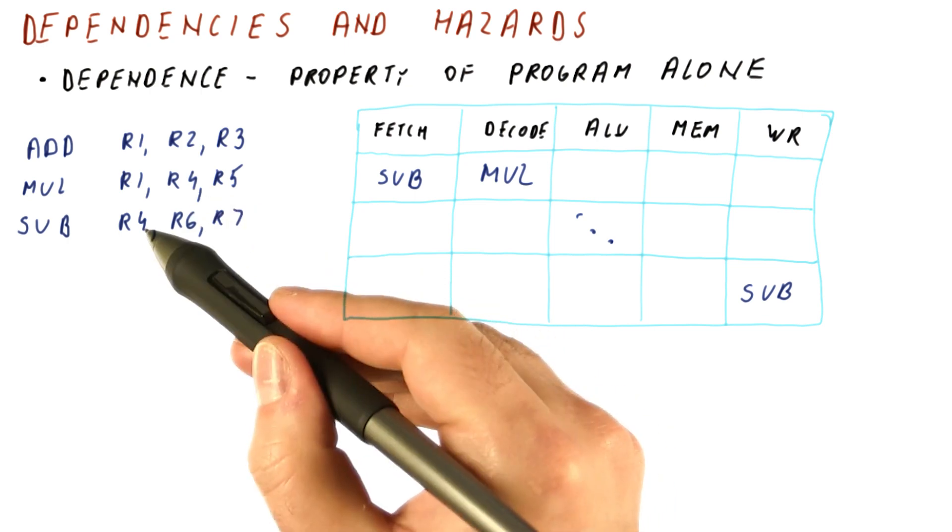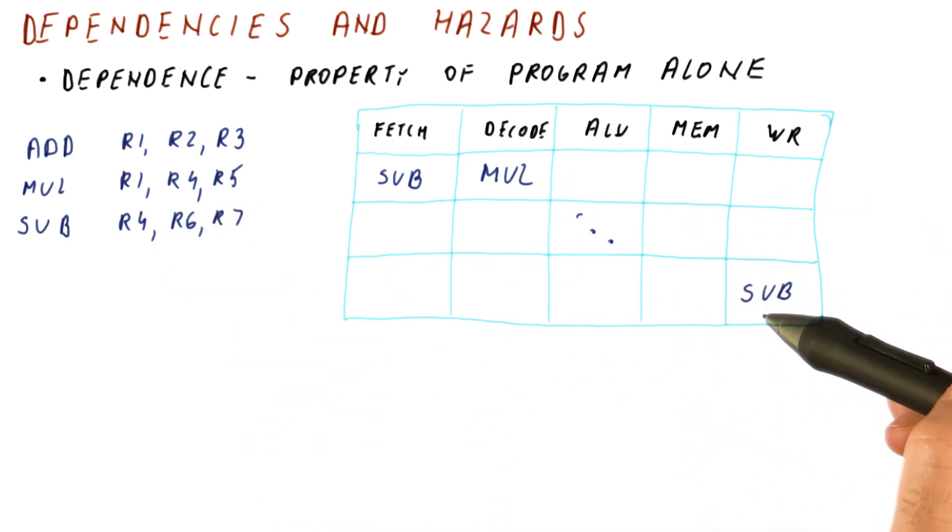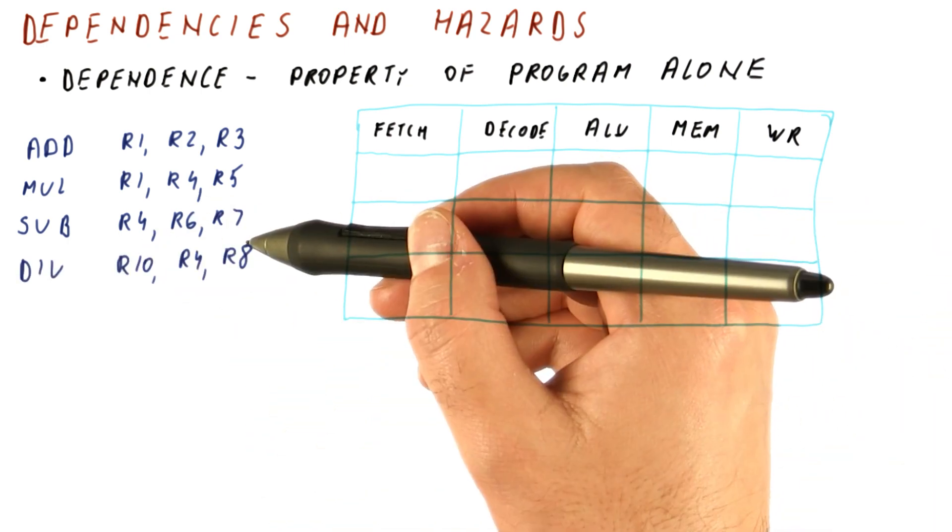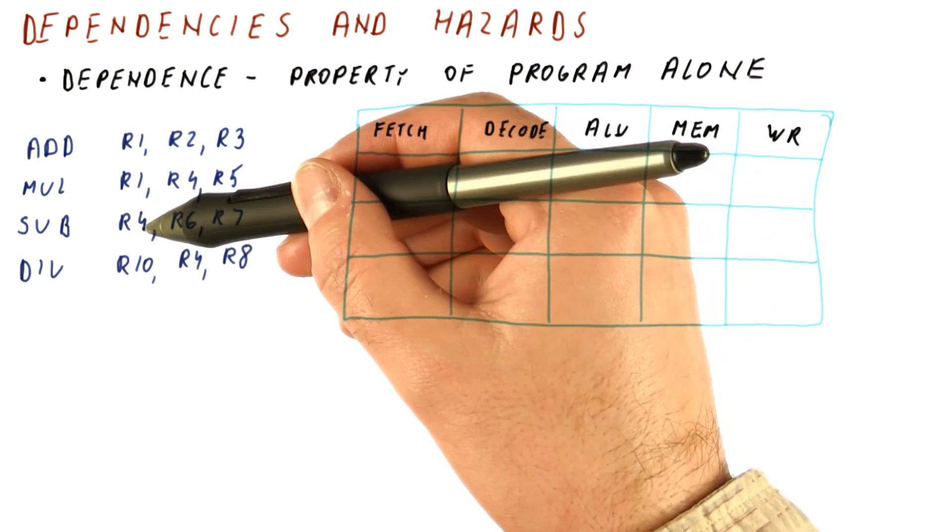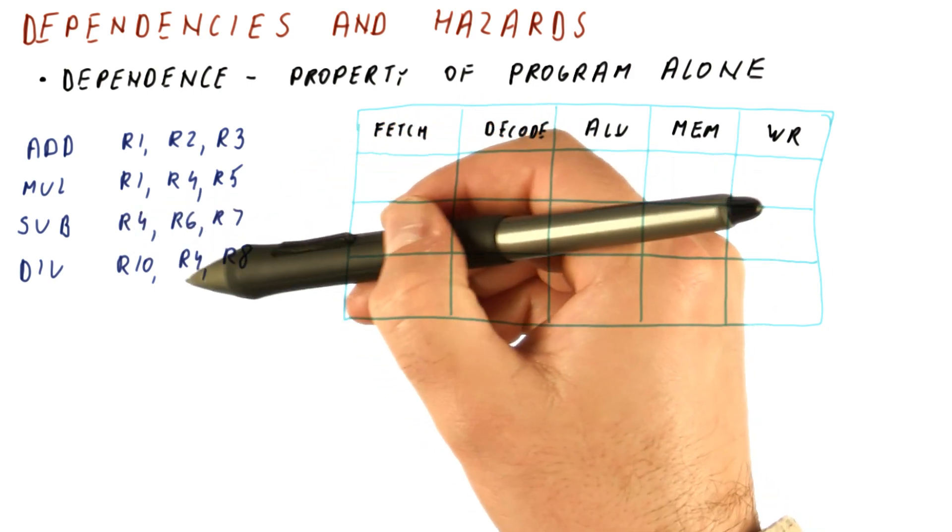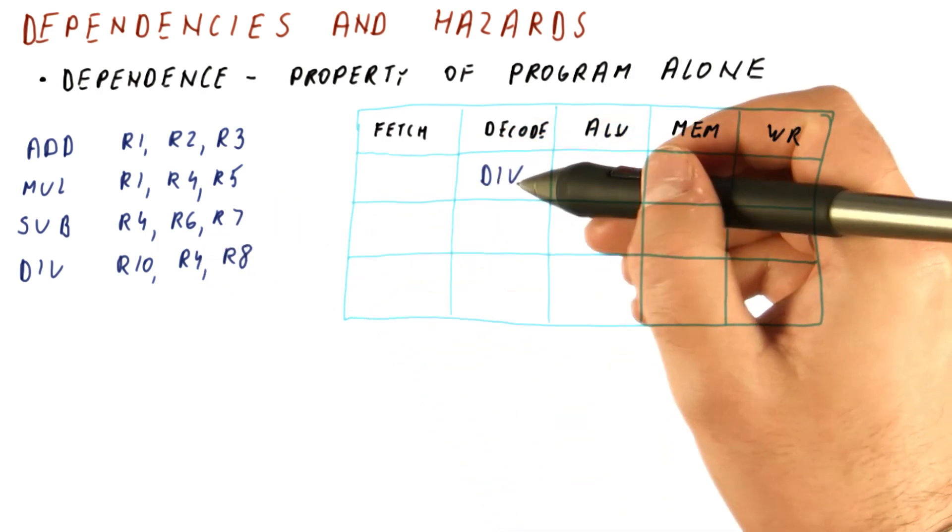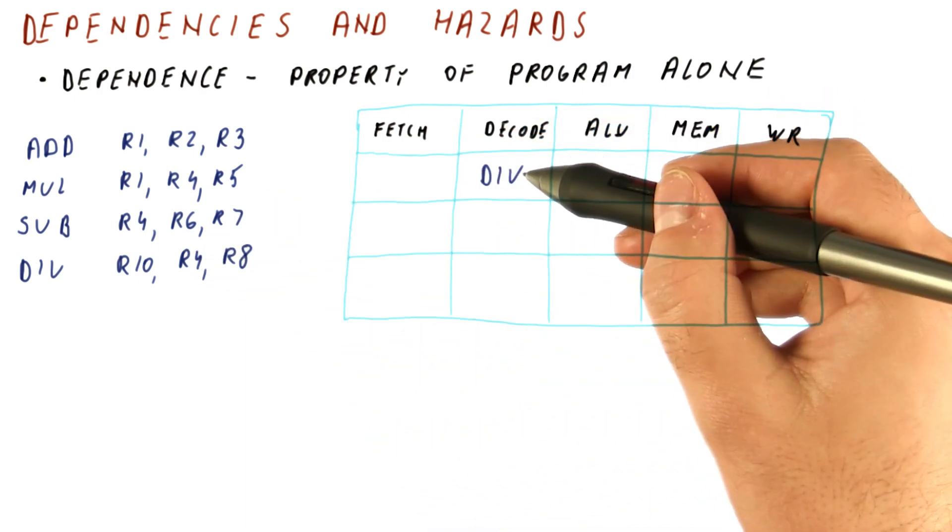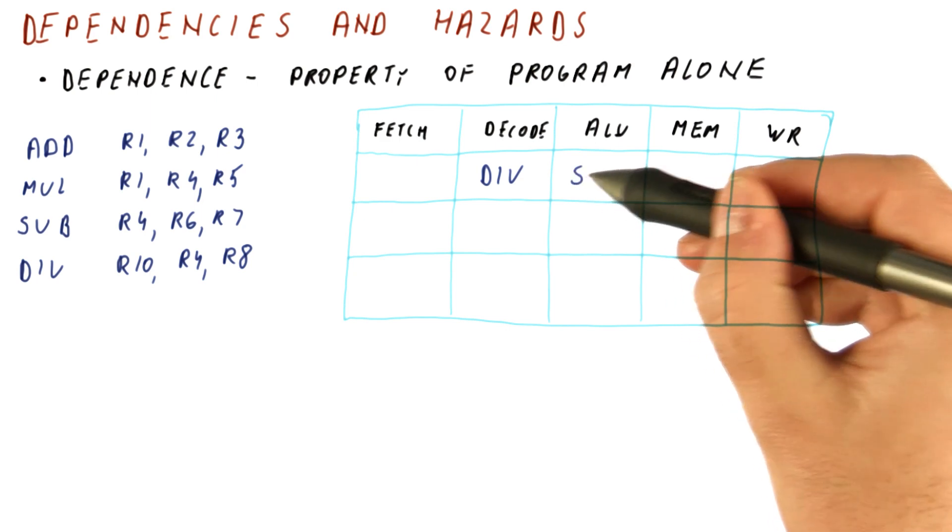So again, we have a dependence that cannot become a problem in our pipeline. Now let's look at what happens when there is a true dependence in this pipeline. In this case, R4 here should be used by the next instruction.